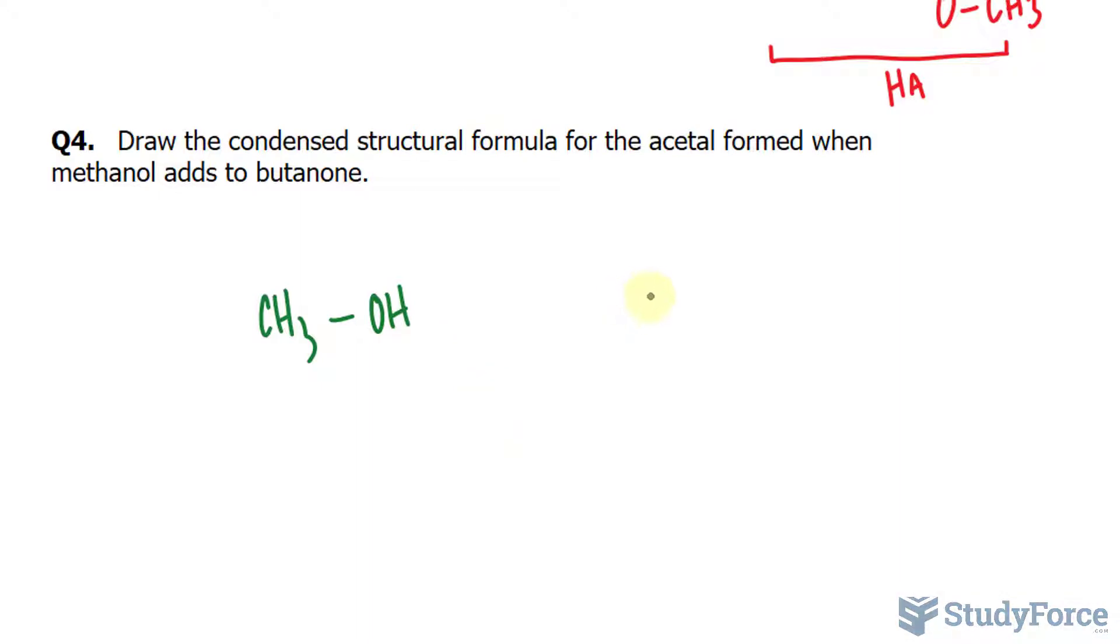And butanone is a four-carbon chain. It is a ketone because it ends with O-N-E, but there's no number in front of the word.